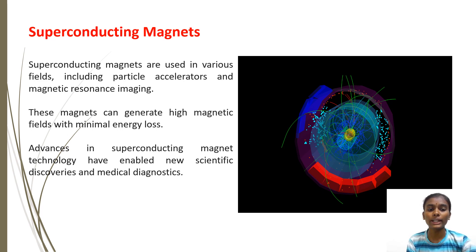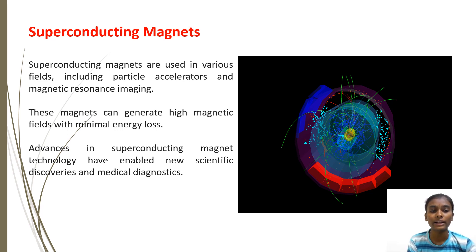Superconducting magnets work just like regular electromagnets, except that there is no resistance to electricity. There is no heat generation, so no energy is lost. Superconducting magnets are used in various fields, including particle accelerators and magnetic resonance imaging, and can generate magnetic fields with minimal energy loss. Advances in superconducting magnet technology have enabled new scientific discoveries and medical diagnostics.